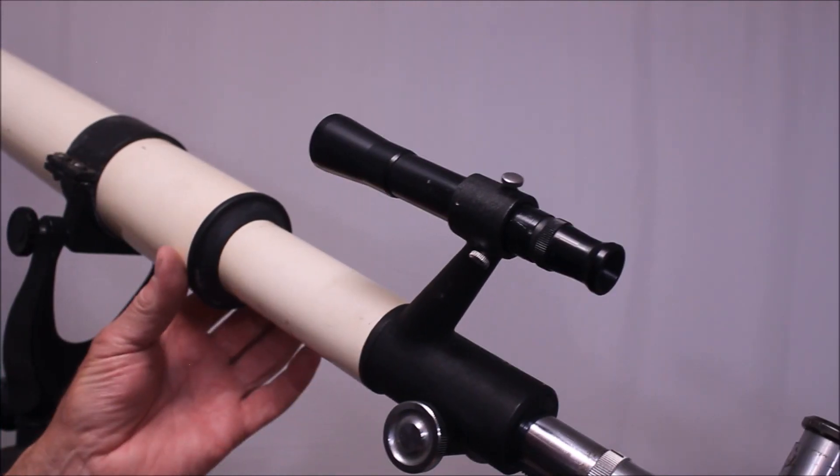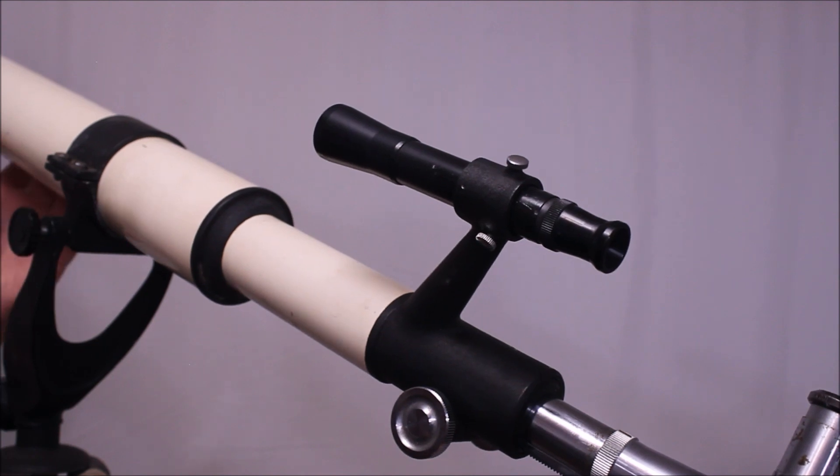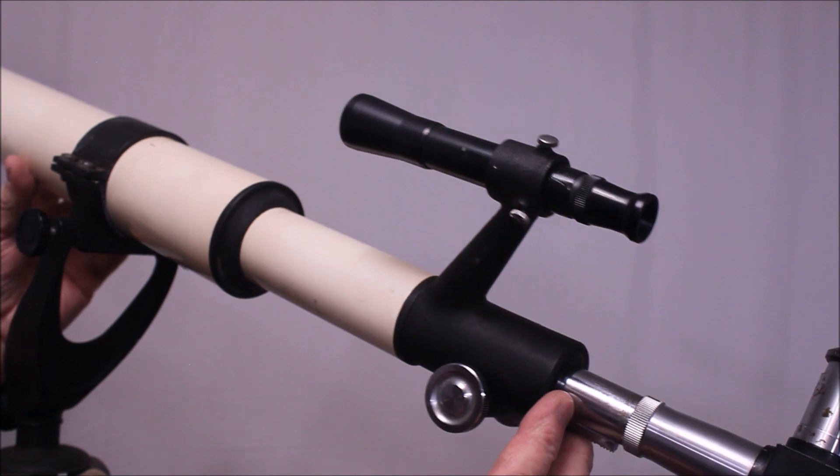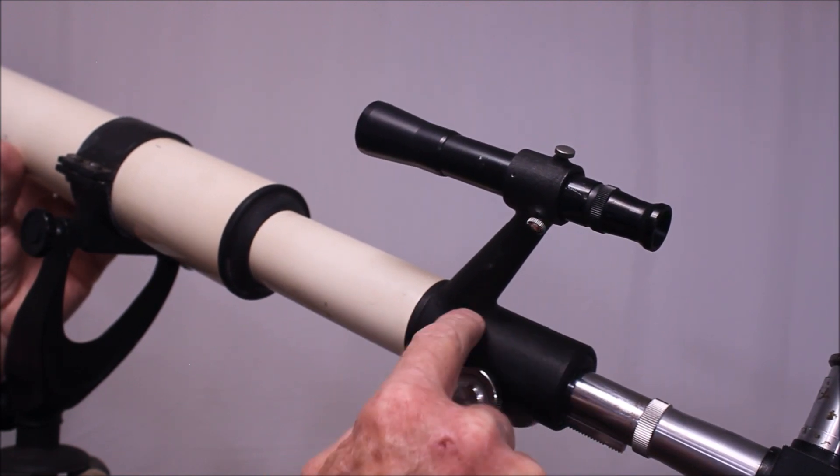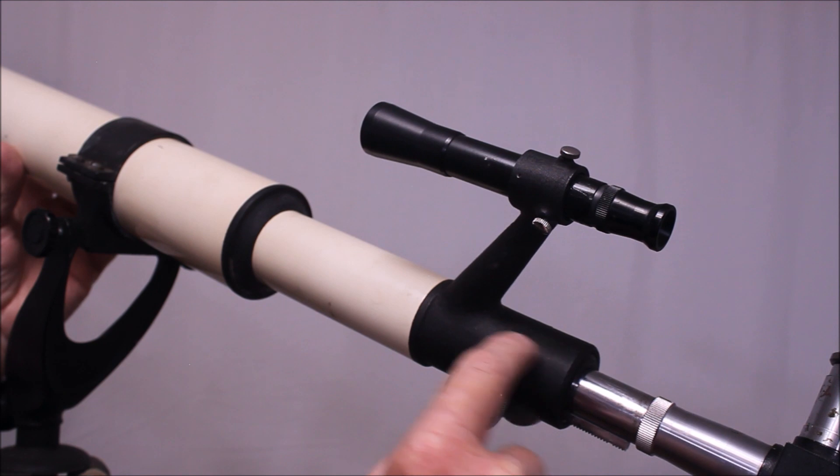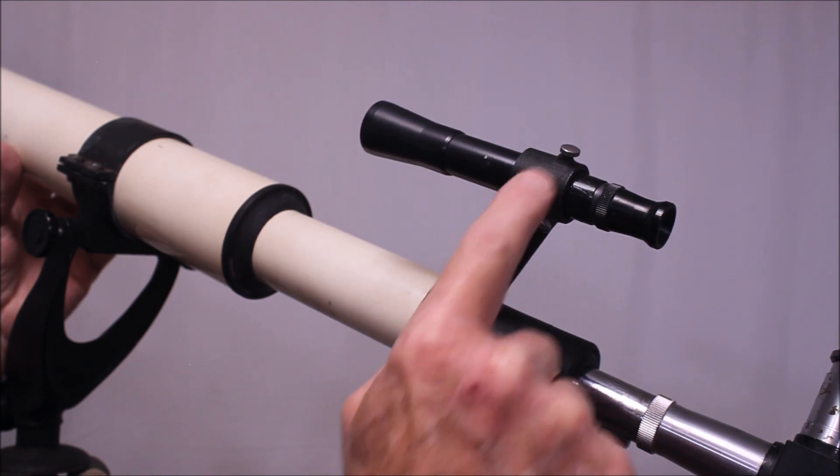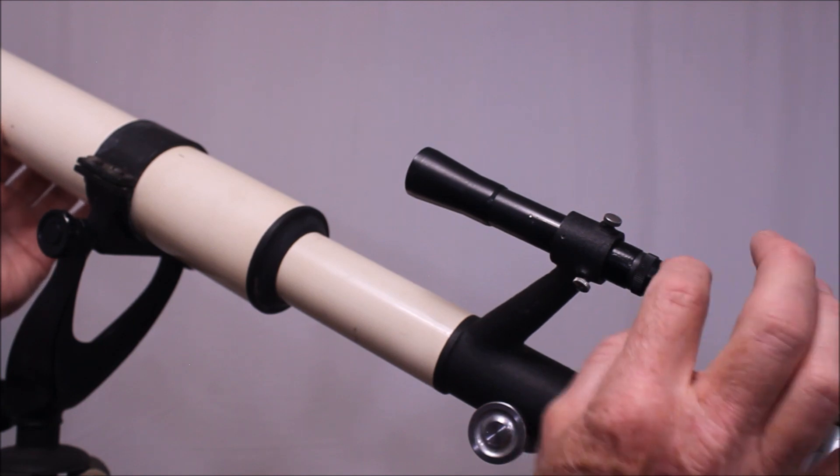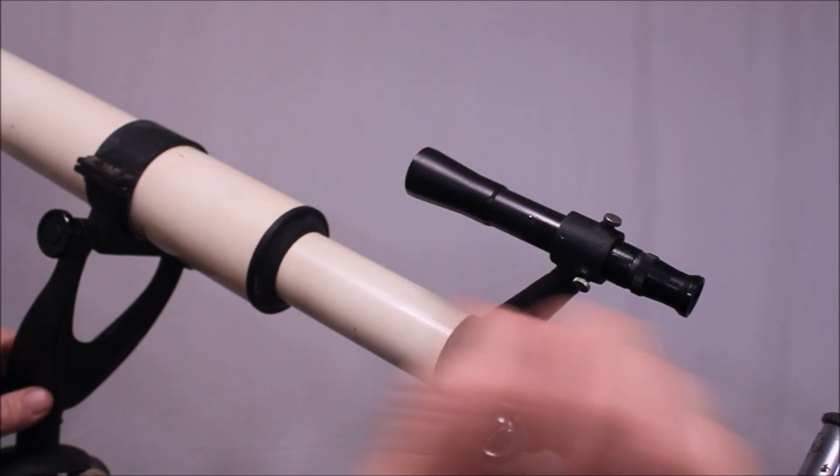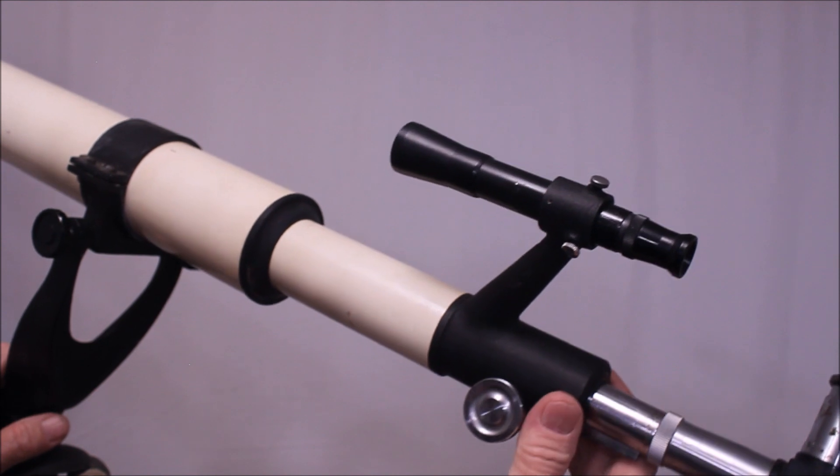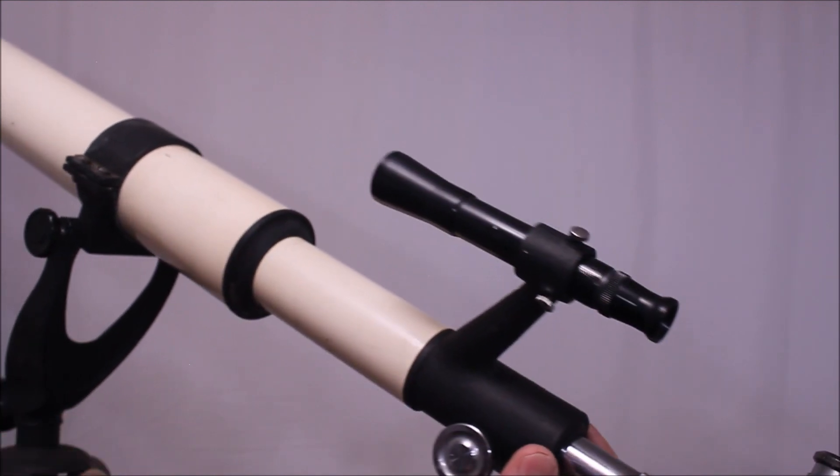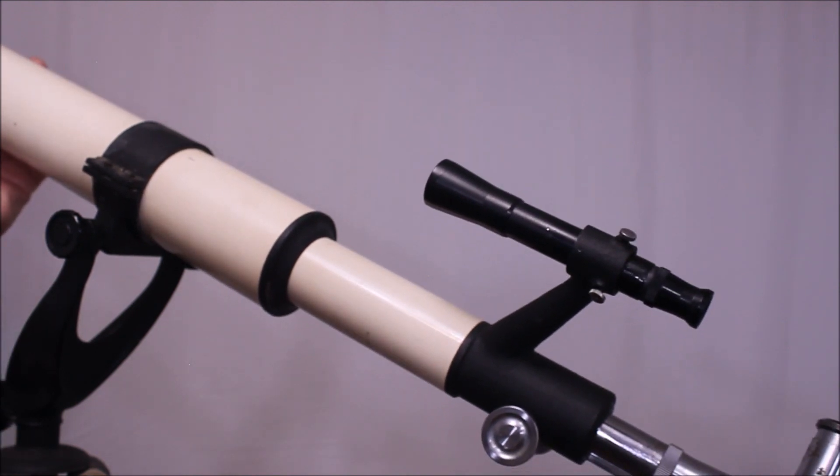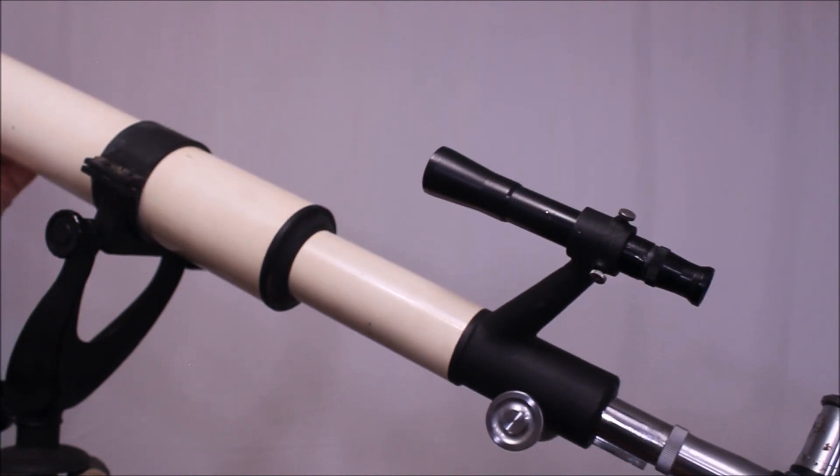Take a look at this just beautiful little finder. And one of the most unusual things here is that the finder, this is all part of the same casting, the whole focuser here, and the finder mount is all one casting. And the lines on the finder are also beautiful, and it's got a really nice, delicate little crosshair in there. I think maybe 20, 25 millimeters, something like that, so it's maybe a 5 by 25.